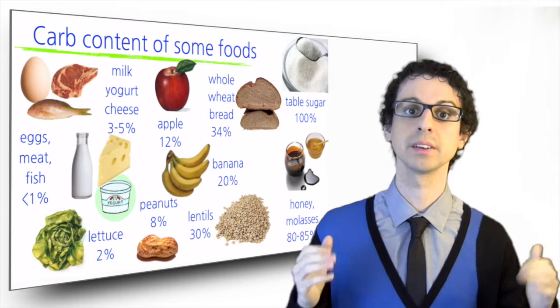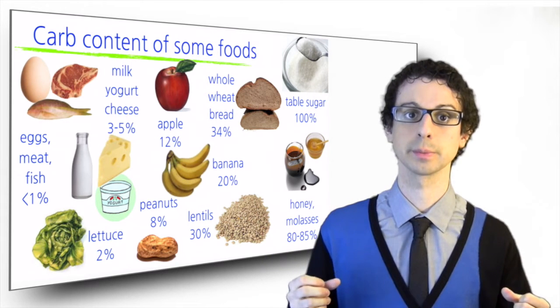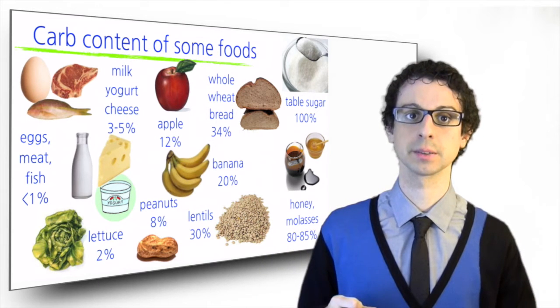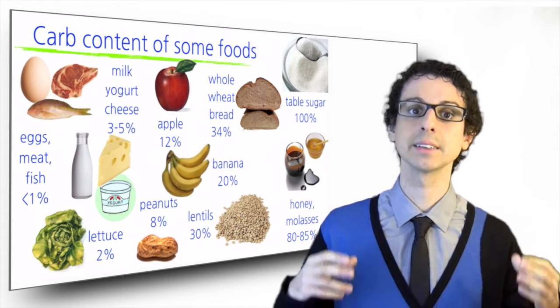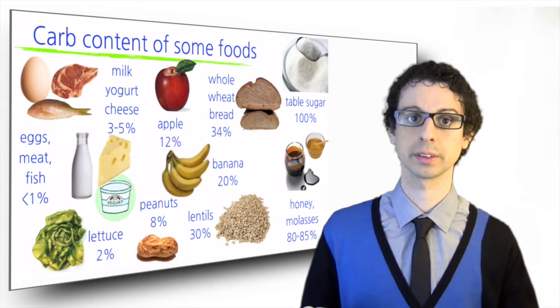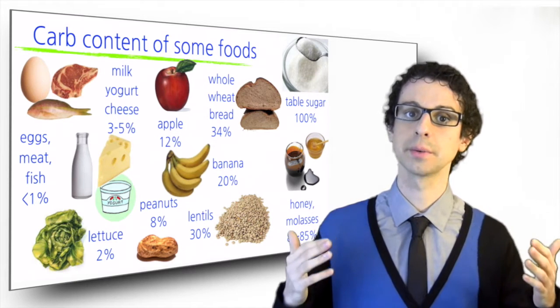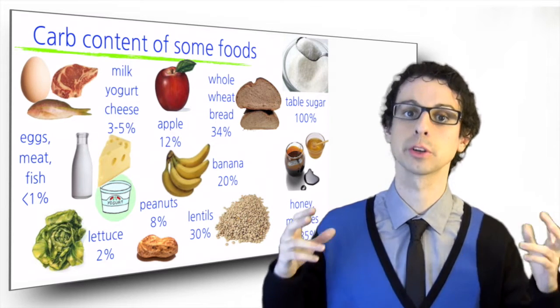Milk, cheese, and yogurt have between 3 and 5%, mainly lactose. Peanuts have 8%, an apple 12%, a banana 20%, lentils 30%, whole wheat bread 34%. At the very end of the range, we have the so-called pure sugars.